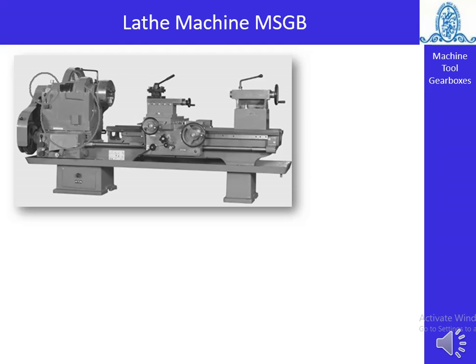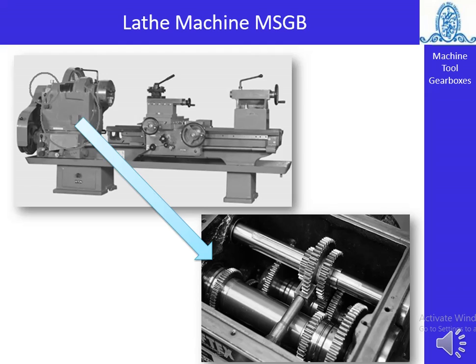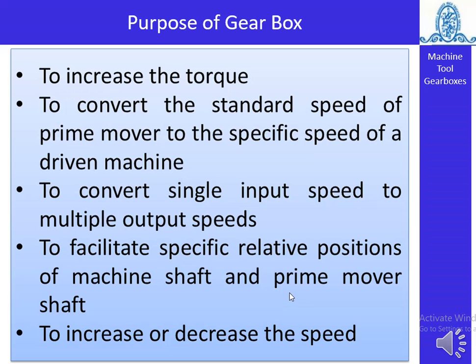The lathe machine is one example where the machine tool gearbox is used. In the lathe machine, there are different shafts and various gears mounted on them. By using these gears and the gearing arrangement, we can have different speed steps at the spindle, and depending on that we can achieve different output speeds.